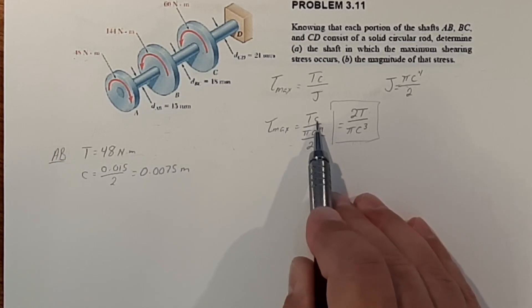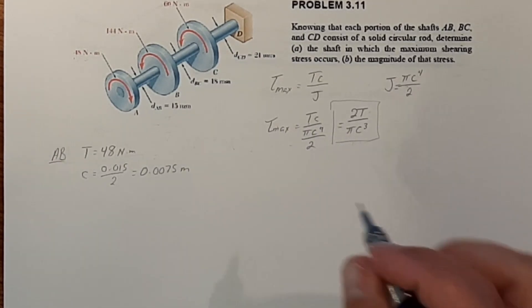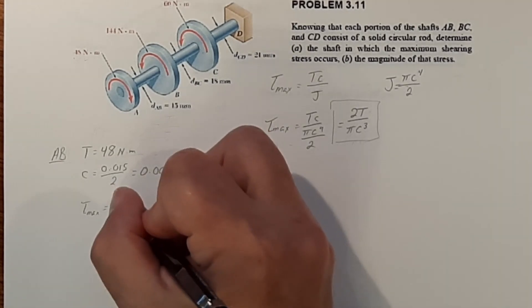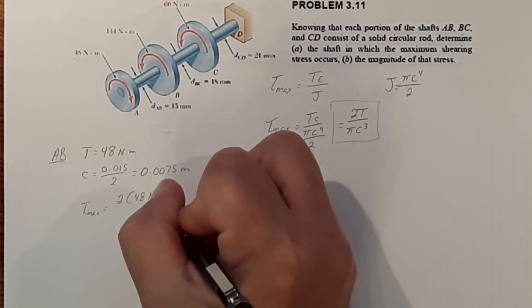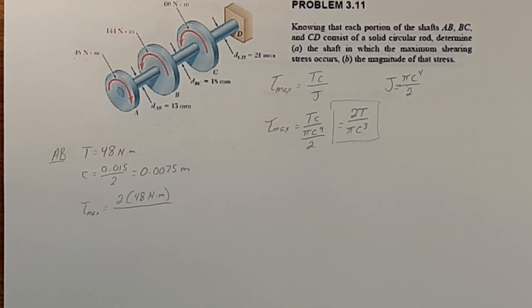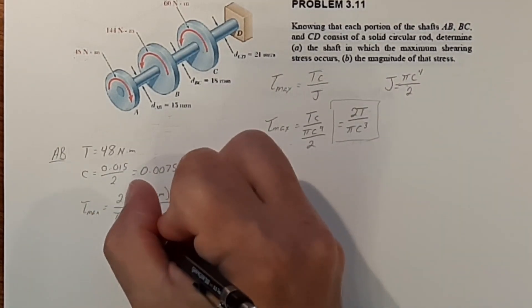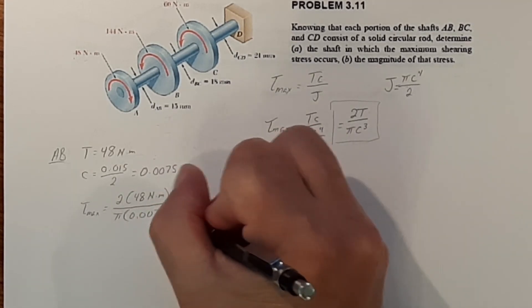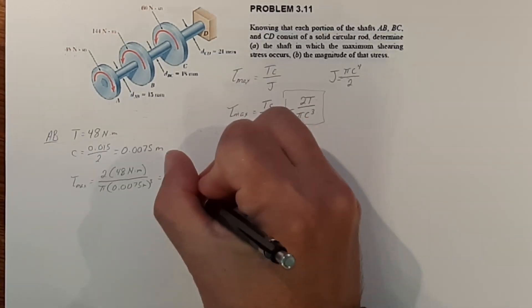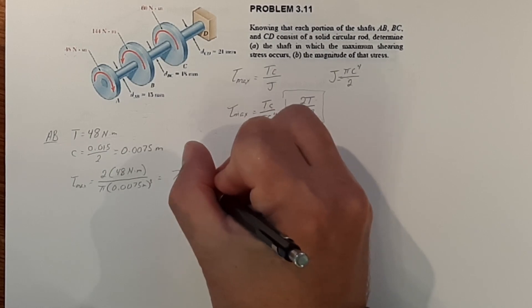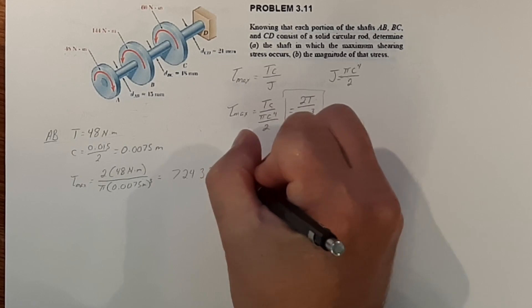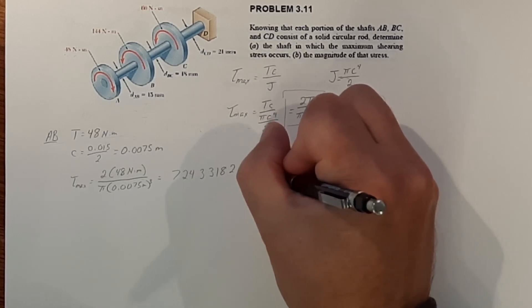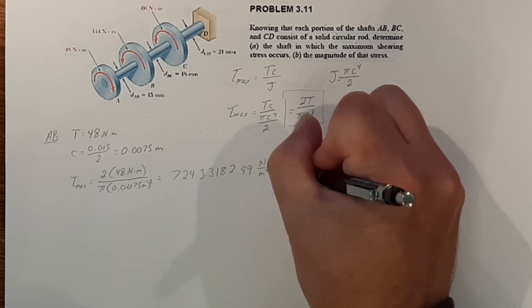We have torque, we have our radius, looks like we have everything we need to solve this. So tau max is equal to 2 times the torque 48 newton meters over pi times 0.0075 meters cubed. That equals 72433182.999 Newtons per meters squared or pascals.